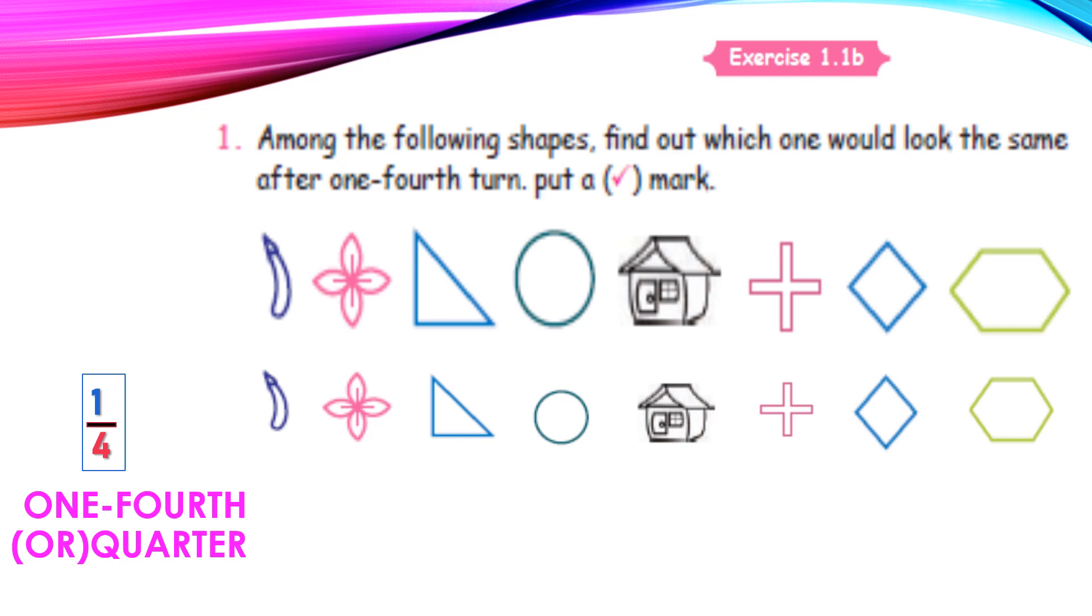Exercise 1.1b. Among the following shapes, find out which one would look the same after one-fourth turn. Put a tick mark. So one-fourth turn, around four shapes, we should put a tick mark. One-fourth turn or quarter turn. Let us see the shapes one by one.